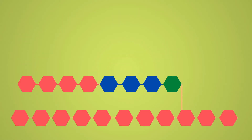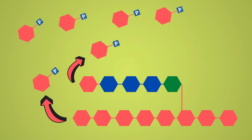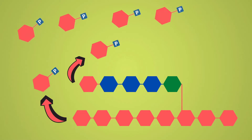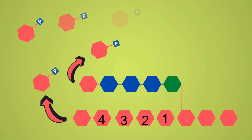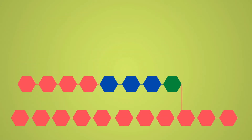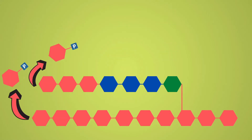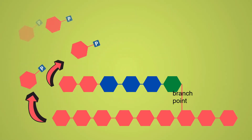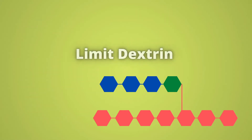Glycogen phosphorylase acts repetitively on the non-reducing ends of both the glycogen branch as well as the main branch, until it reaches the fourth glucose residue away from the branch point. You can see here — glucose 1, 2, 3, and 4 — so glycogen phosphorylase will cleave the alpha glycosidic linkages until it reaches glucose residue number 4, the fourth residue from the branch point, until a glycogen molecule known as limit dextrin is formed.